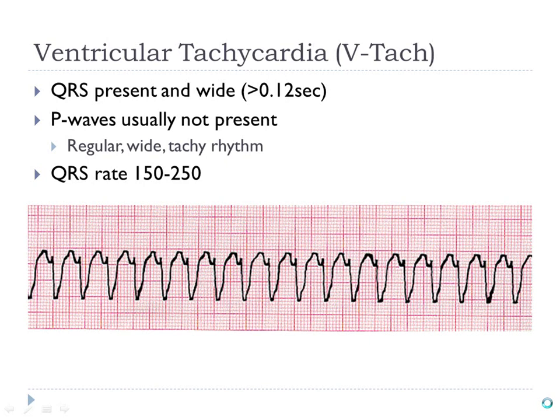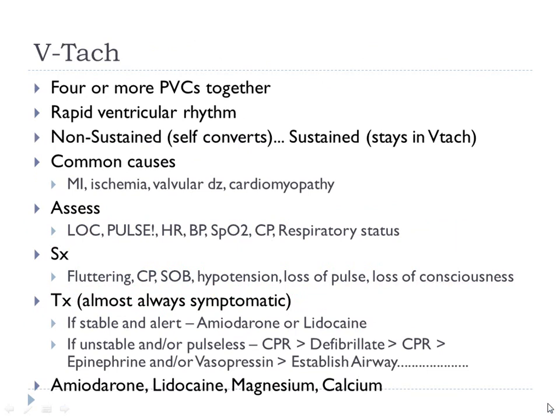You should know VTAC immediately. Anything more than three PVCs — four or more in a row — is what we call a short run of VTAC. You have sustained and unsustained VTAC. Sustained means the patient is in VTAC and not coming out of it. Unsustained means they're coming in and out of it — self-converting back into a normal or different rhythm.